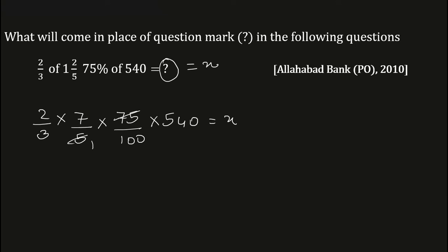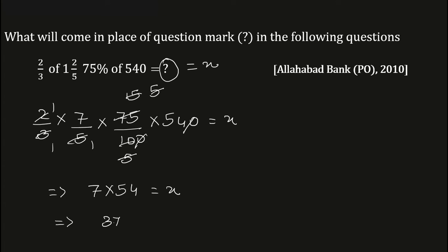5 and 5 cancel, then 3 and 15 cancel, then zeros cancel, then 2 and 2 cancel, then 5 and 5 cancel again. The answer is 7 × 54, which is equal to x. Now 7 × 54 gives you the answer 378. So the value of the question mark is equal to 378. This is the answer.